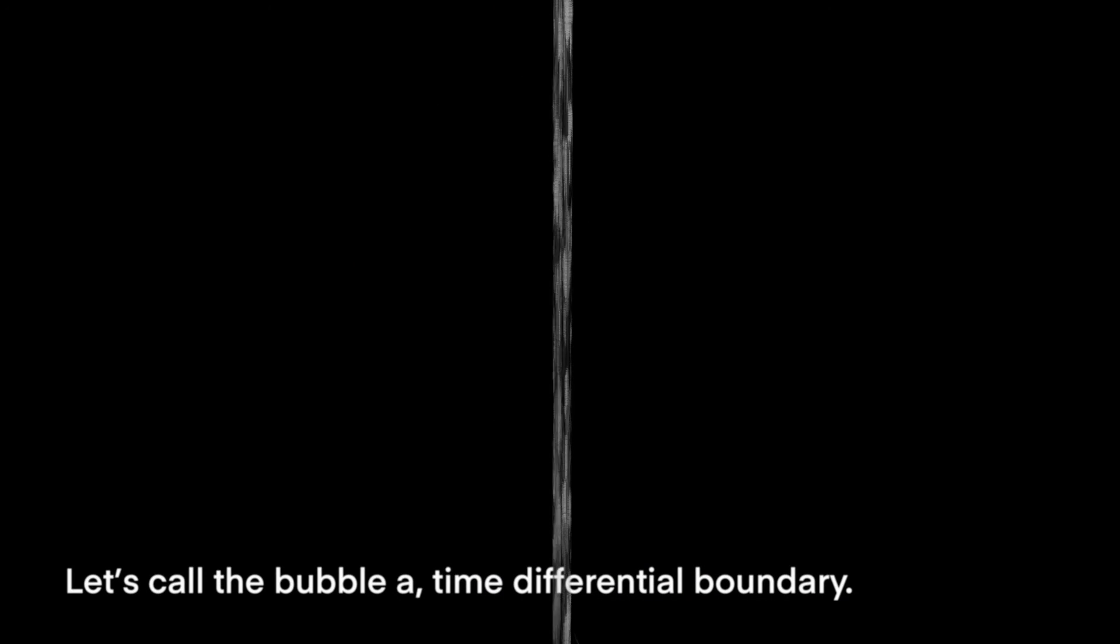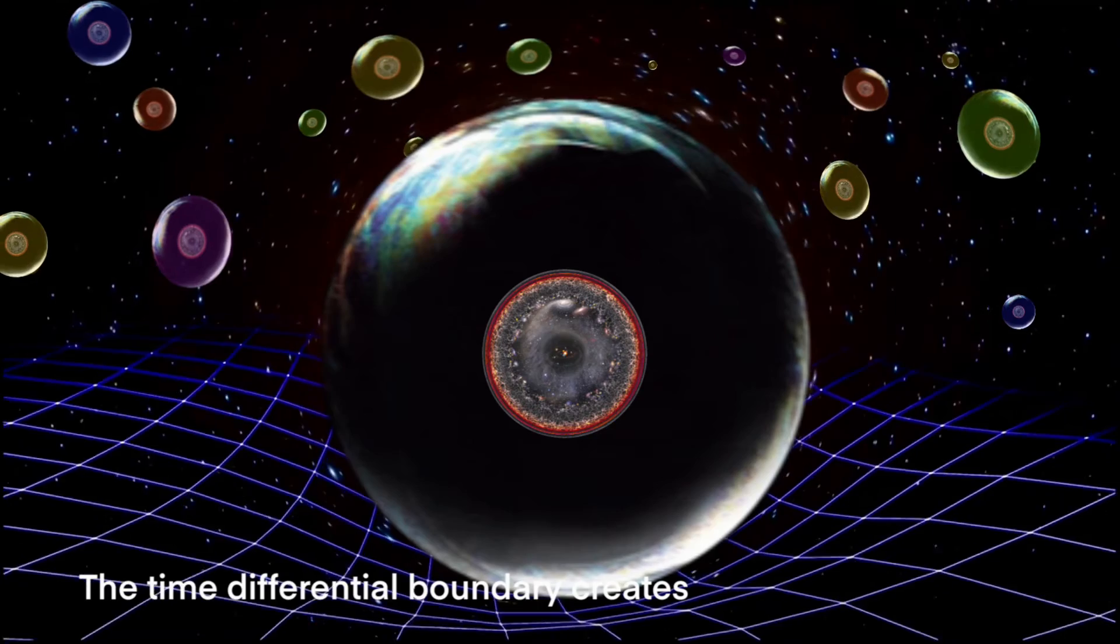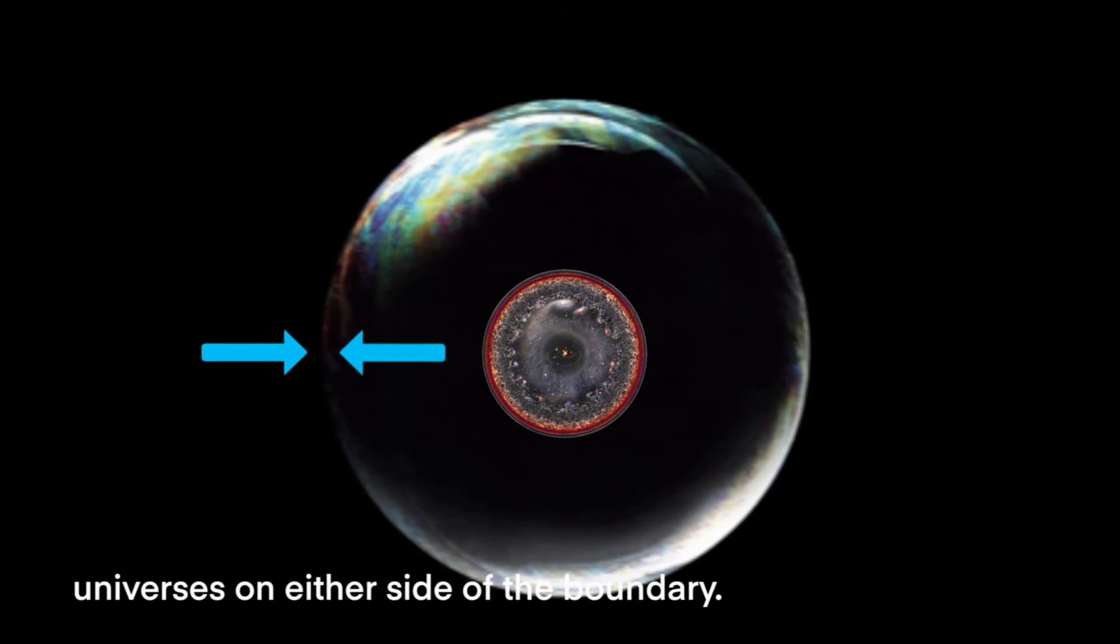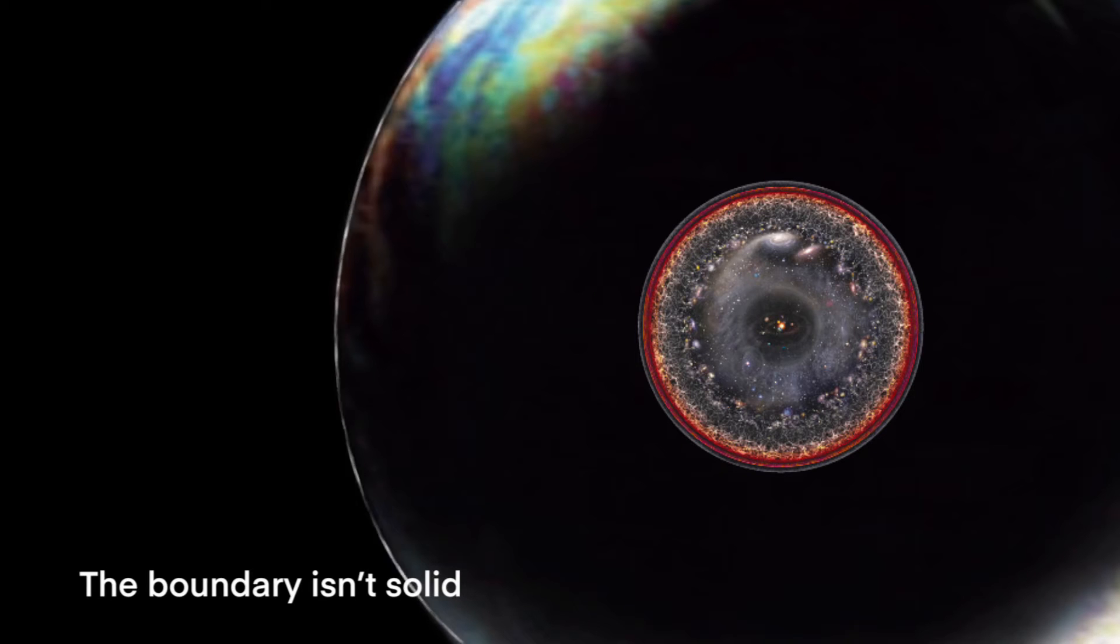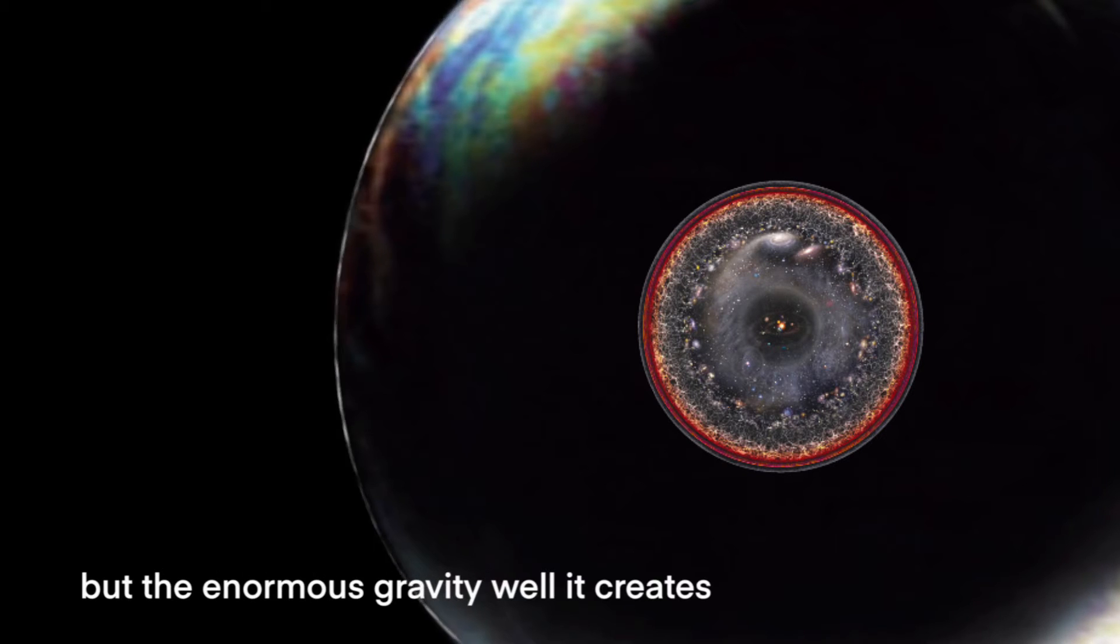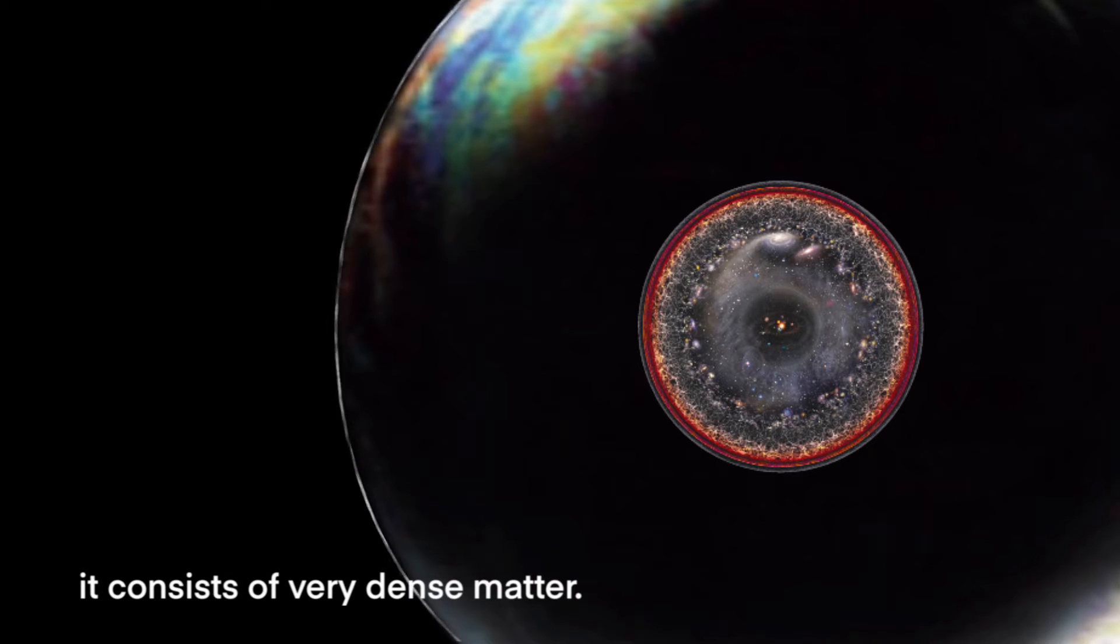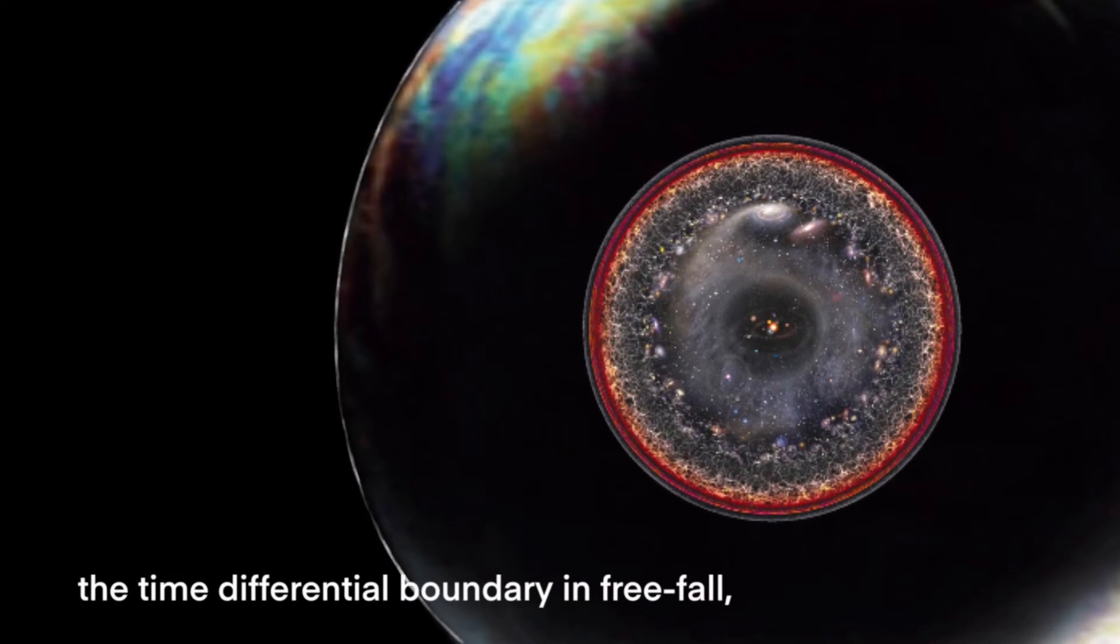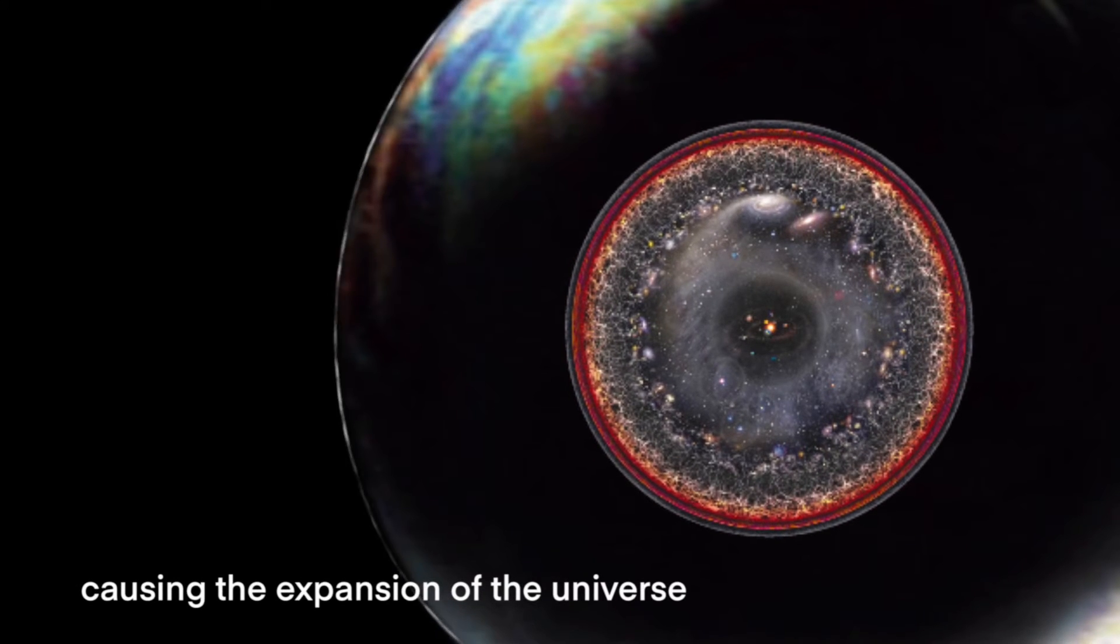Let's call the bubble a time differential boundary. The time differential boundary creates a massive distortion in space-time because the fourth dimension of time is being stretched by the two hugely different time frames on each side of the boundary. This distortion in space-time results in a gravity well so large that it affects everything in the two universes on either side of the boundary. The boundary isn't solid and doesn't physically exist, but the enormous gravity well it creates makes it behave as though it consists of very dense matter. This dense matter can be regarded as virtual matter. The magnitude of the gravity well causes all matter in the universe to fall towards the time differential boundary in free fall, causing the expansion of the universe to gradually accelerate over time.